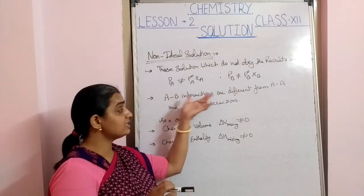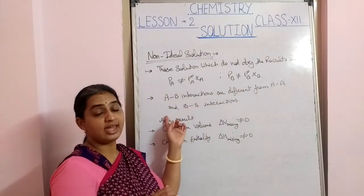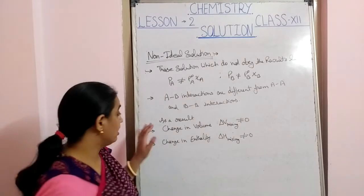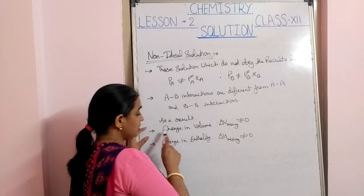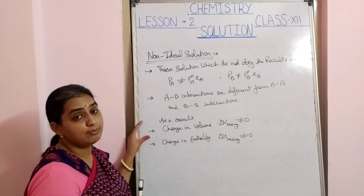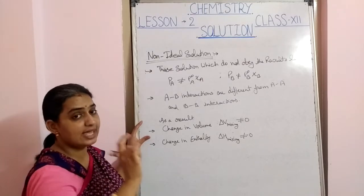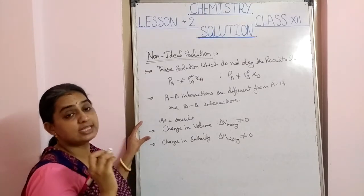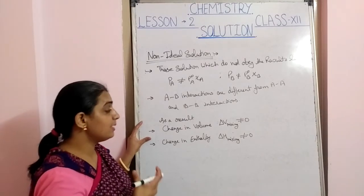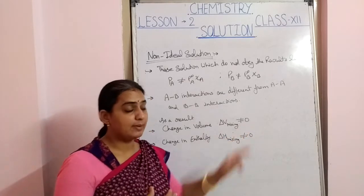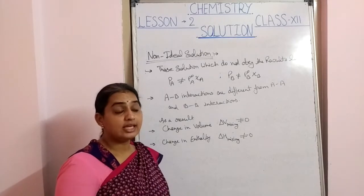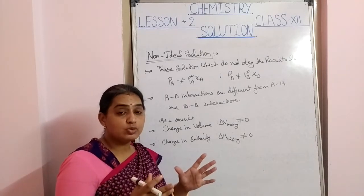The third condition for non-ideal solutions is a change in volume when mixing the two components A and B. When A and B are mixed with each other, some change in volume occurs — it can be positive or negative depending on the intermolecular interactions between the molecules.